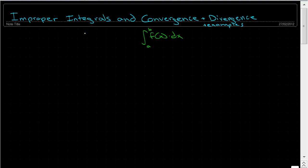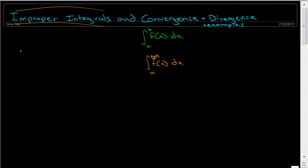But when improper integrals come along, they might give you an integral that looks different. You've got the integral of f of x dx, and instead of going from a to b, it says you're going from a to infinity. It seems mind-boggling to calculate the definite area of an infinite function. And so these are called improper integrals.